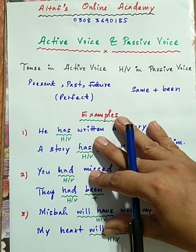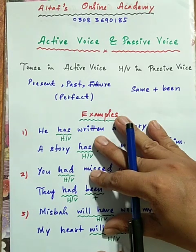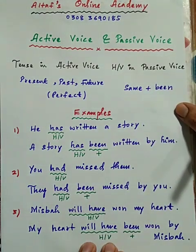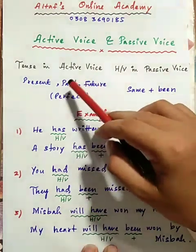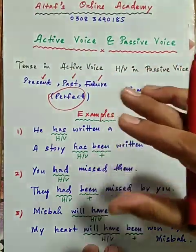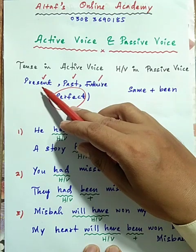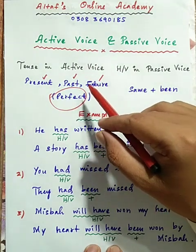آپ کو یاد ہے کہ perfect family کے tenses میں helping verbs کیا ہوتی ہیں۔ Present perfect میں have/has plus third form، past perfect میں had plus third form، اور future perfect میں shall have / will have plus third form of the action verb استعمال ہوتی ہیں۔